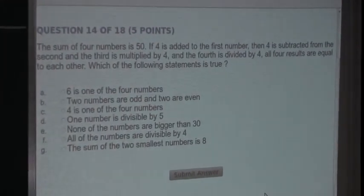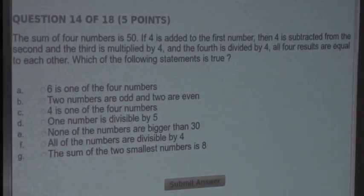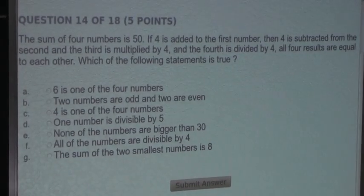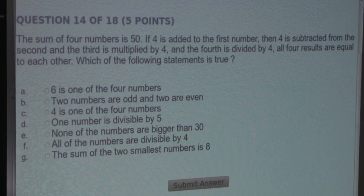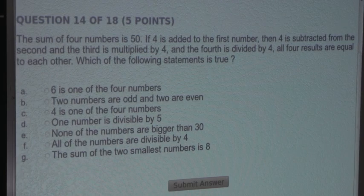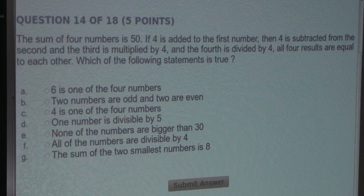The sum of four numbers is 50. If four is added to the first number, then four is subtracted from the second, and the third is multiplied by four, and the fourth is divided by four, all four results are equal to each other. Which of the following statements is true?